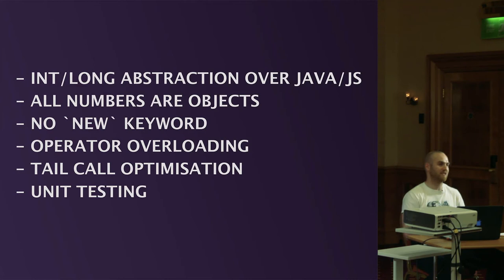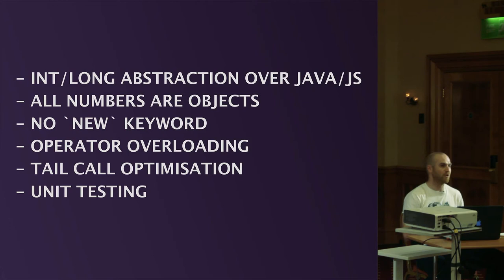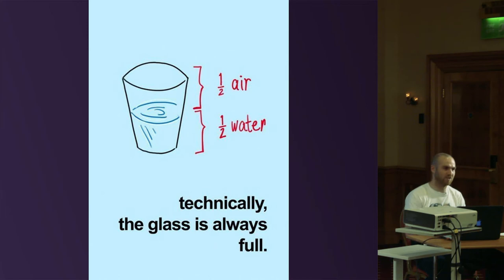So this was factorial. What we learned: `Int` and `Long` are just like strings — an abstraction. All numbers are objects, no `new` keyword, operator overloading, tail call optimization with `tailrec`. Unit testing is basically Java unit testing. Why it worked in the IDE with no special plugin: Kotlin compiles to normal Java bytecode, so JUnit plugins can just pick up class files and run them straight away. It will integrate with all tools.